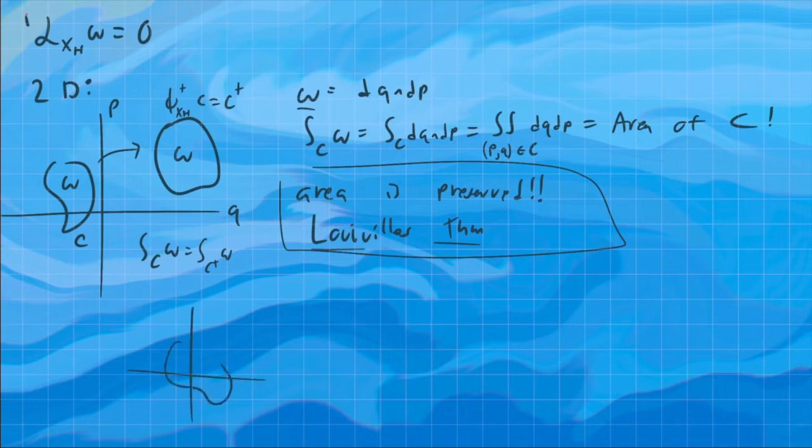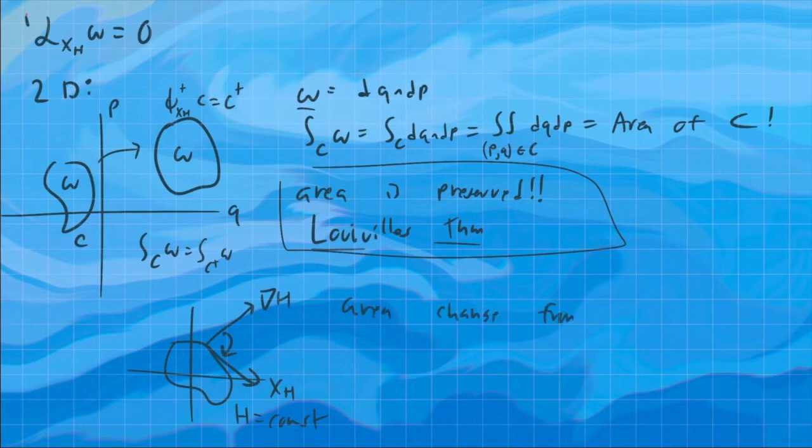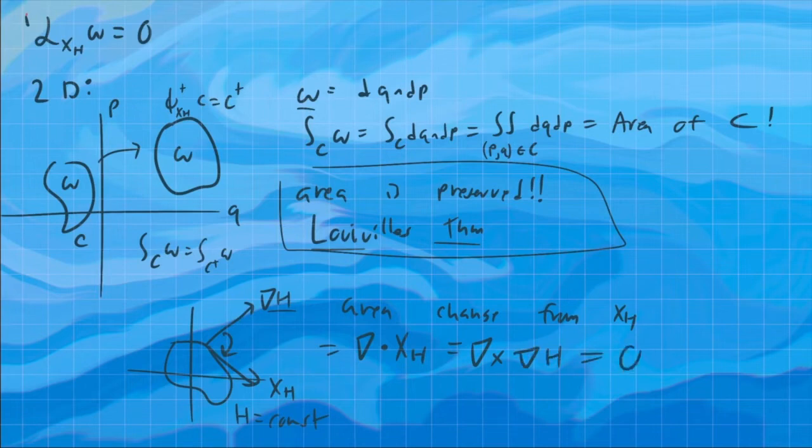We can see this directly from how we define Hamiltonian vector fields. Because remember, if this is like the level set of our Hamiltonian, then we have XH, we designed it so that XH is going to be perpendicular to the gradient of H. So then the divergence, so the area change from XH locally, that's just the divergence of XH. But you're looking at the divergence of something which is rotated 90 degrees at each point. So that's just the curl. And you can do this out in coordinates if you want. But we get the curl of the gradient of H. And by vector calculus identities, that's just zero.